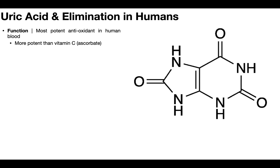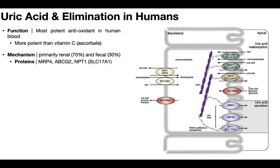But too much uric acid is bad, so excess uric acid is eliminated via the kidneys — primarily renal elimination at 70%, with the other 30% eliminated through the GI tract in feces. In a kidney tubule cell, there are several proteins necessary for transporting uric acid from the basolateral side nearest the blood into the filtrate, giving uric acid secretion. Those transporters are MRP4, ABCG2, and NPT1 (also known as SLC17A1).